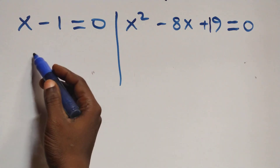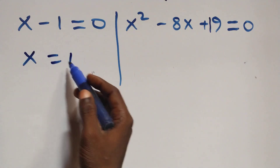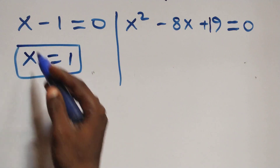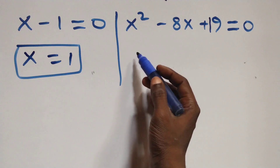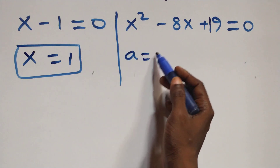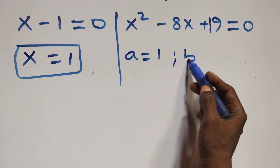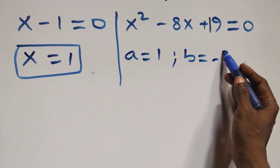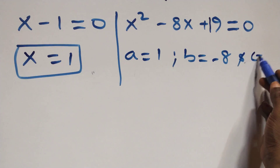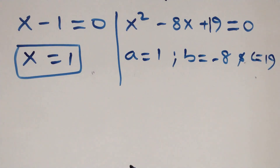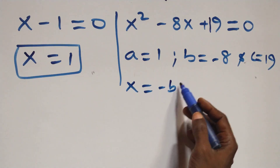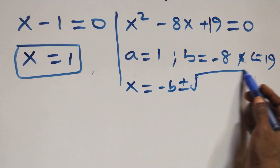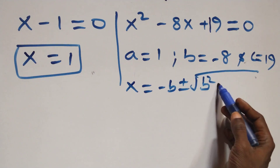So, being on this side, we have x equals to 1, which is a real solution here. And here we have a quadratic equation, where a equals to 1, b equals to minus 8, and c equals to 19. Apply the quadratic formula, which is x equals to minus b plus or minus square root of b squared minus 4ac, all over 2a.